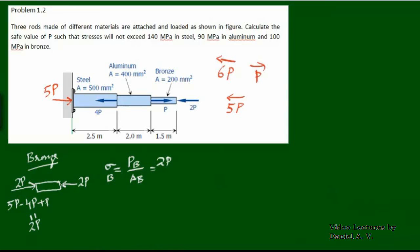The stress in bronze, sigma_bronze, equals load divided by area of bronze, which is 2P divided by 200 mm². Since the stress in bronze should not exceed 100 MPa, we equate this to 100, giving us a value of P equal to 10,000 N.